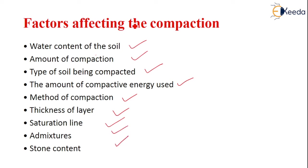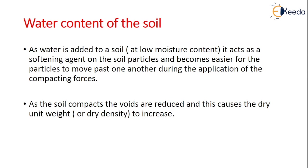Let us briefly know about two or three factors which are affecting the soil compaction. Coming to the first one, that is water content — how water content affects compaction. Generally, when water is added to a soil at low moisture content, it acts as a softening agent on the soil particles, making it easier for the particles to move past one another during application of the compacting forces. As the soil compacts, the voids are reduced and this causes the dry unit weight to increase.